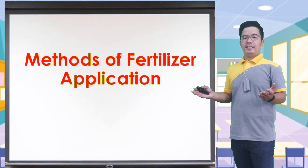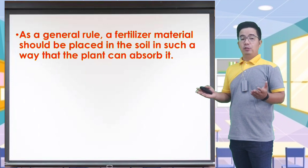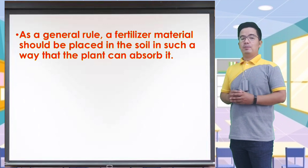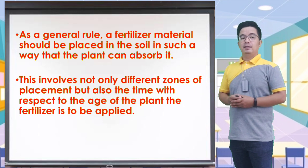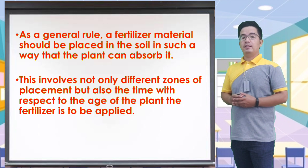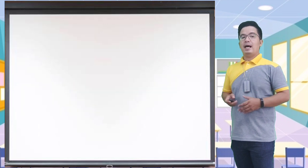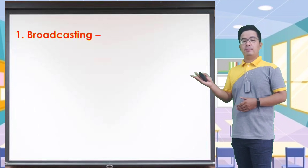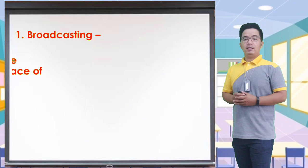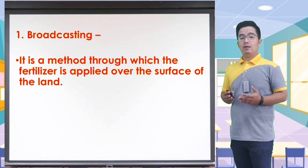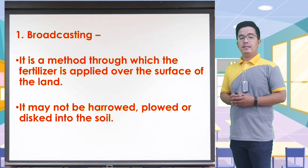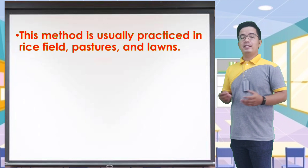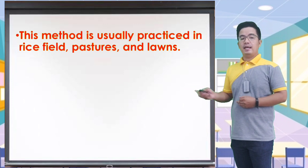Methods of fertilizer application. As a general rule, a fertilizer material should be placed in the soil in such a way that the plant can absorb it. This involves not only different zones of placement, but also the time with respect to the stage of the plant when the fertilizer is to be applied. The first method is broadcasting — a method in which the fertilizer is applied over the surface of the field. It may be harrowed, plowed, or released into the soil. This method is usually practiced in rice fields, pastures, and lawns.